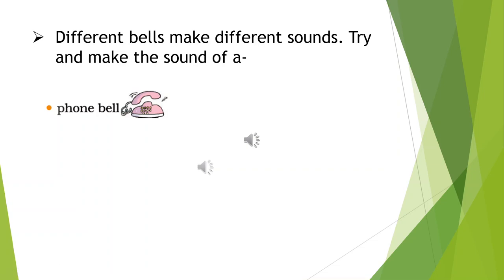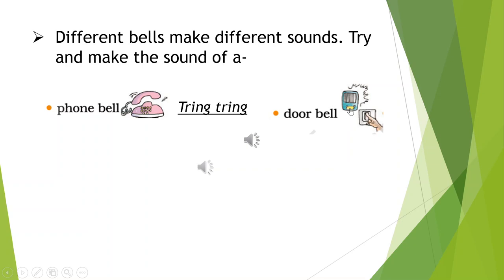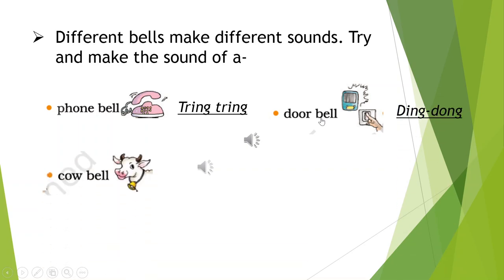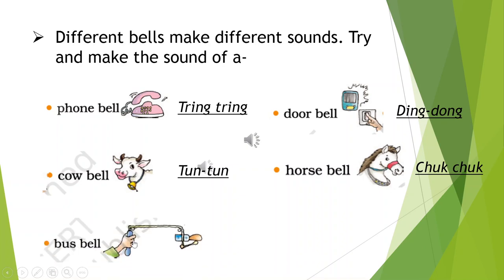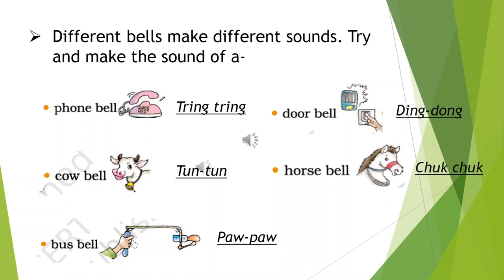Different bells make different sounds. Try and make the sound of a phone bell — tring tring. Correct! Door bell sound — ding dong. Correct! Cow bell sound — tung tung. Horse bell sound — chuck chuck. Bus bell sounds like — paw paw.